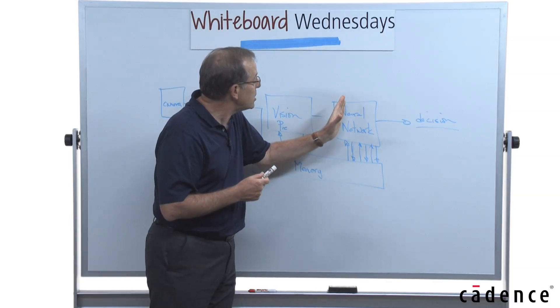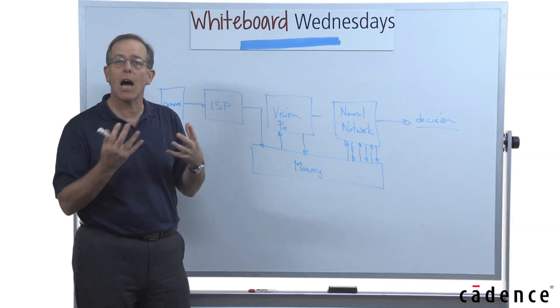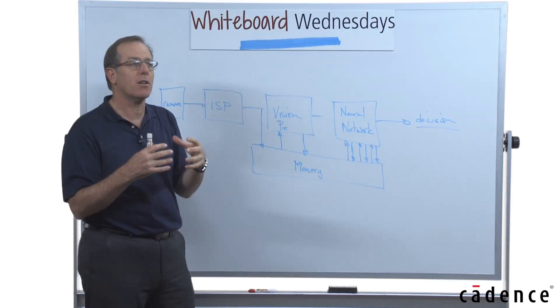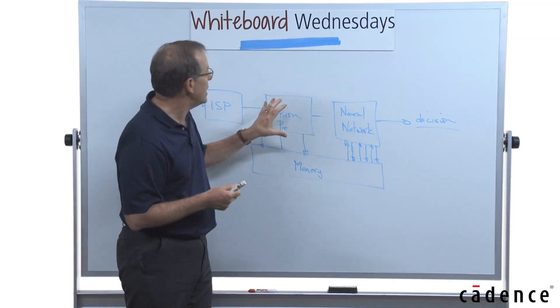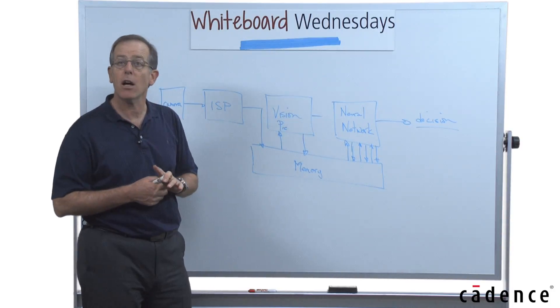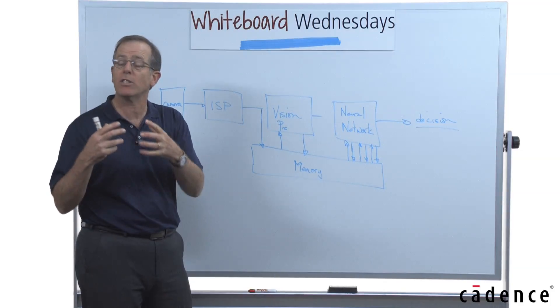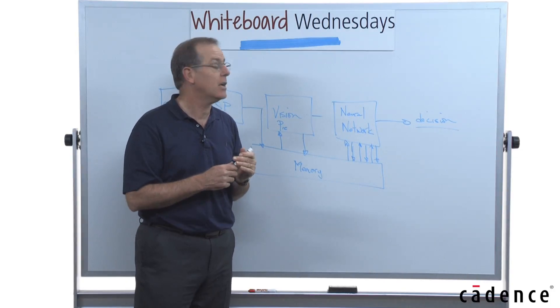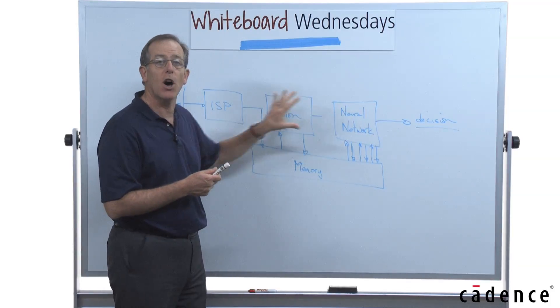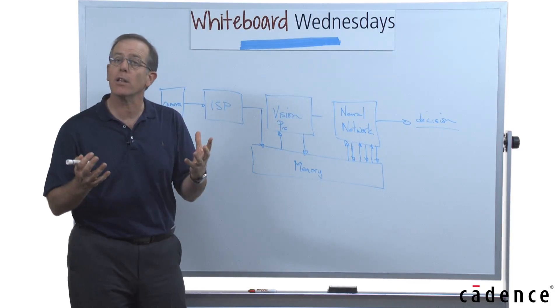And as you may know, the neural network itself has many design options in terms of the number of layers, the size of the layers, the connectivity between the layers. And these two stages, the vision processing and the neural network itself, often involve both a high degree of software sophistication and a lot of computation. And that's why the design of these networks, the choice of the hardware engine, the choice of the software development environment is critically important.